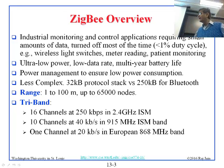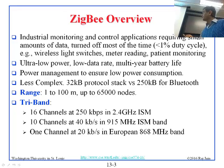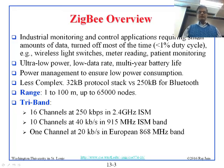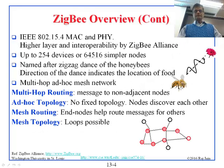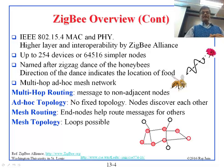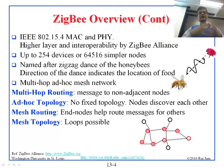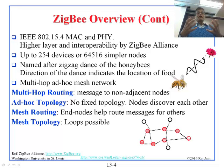ZigBee runs in three different bands, all license-exempt ISM bands: 2.4 GHz, 915 MHz, and 868 MHz in Europe. The 2.4 GHz band is the same as Bluetooth, but ZigBee has the additional 915 MHz band and can do up to 40 kilobits per second. ZigBee uses 802.15.4 at the MAC and PHY layers. There is a group called the ZigBee Alliance — a group of companies that got together to define how to use 802.15.4, similar to the Wi-Fi Alliance. Their products are certified as ZigBee-compliant, and they decided the rest of the protocol.